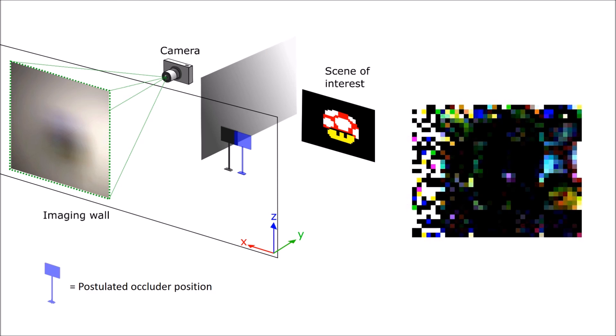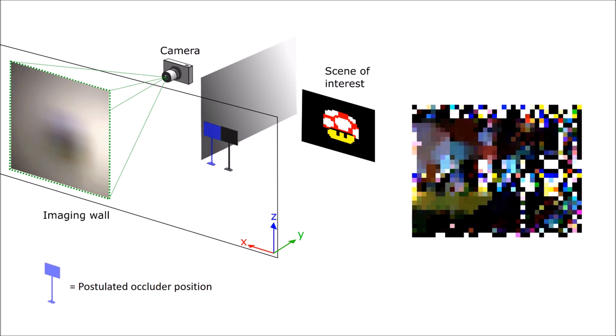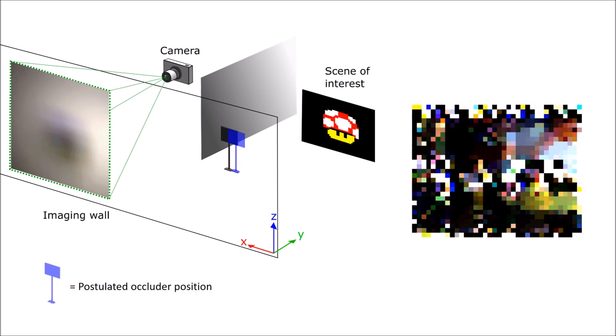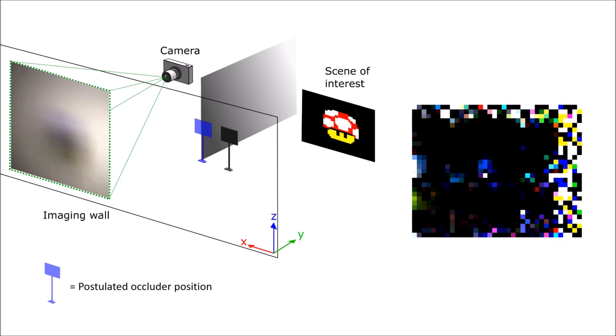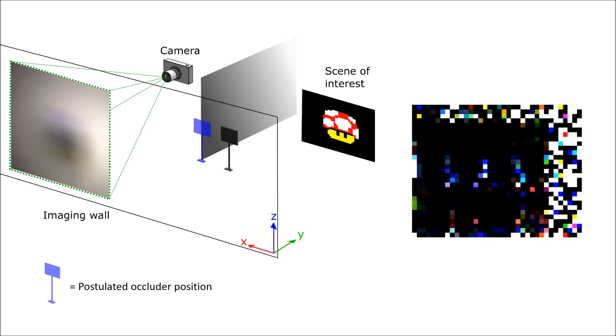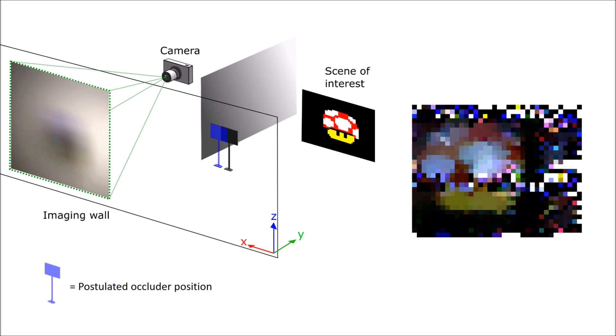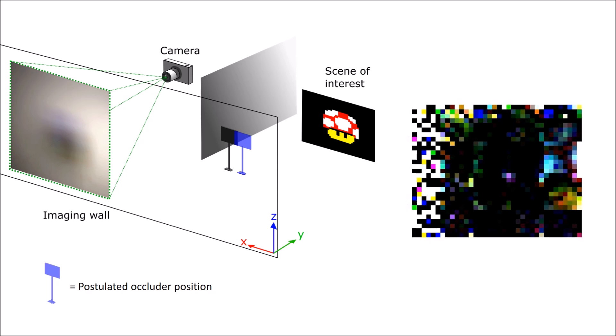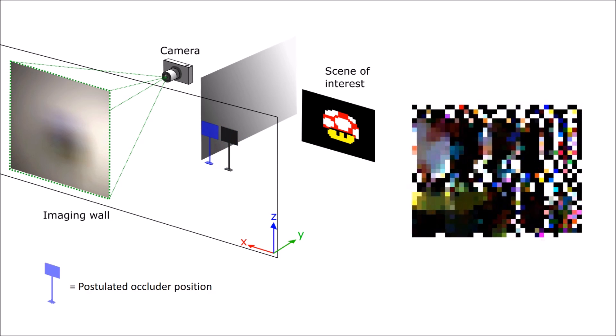When the postulated occluder position is incorrect, we observe a deterministic, predictable shift in the reconstructed image due to the shift in the computational field of view. The shift is a function of the distance between the monitor and wall, the monitor and the occluder, and the offset of the postulated position from the true position.